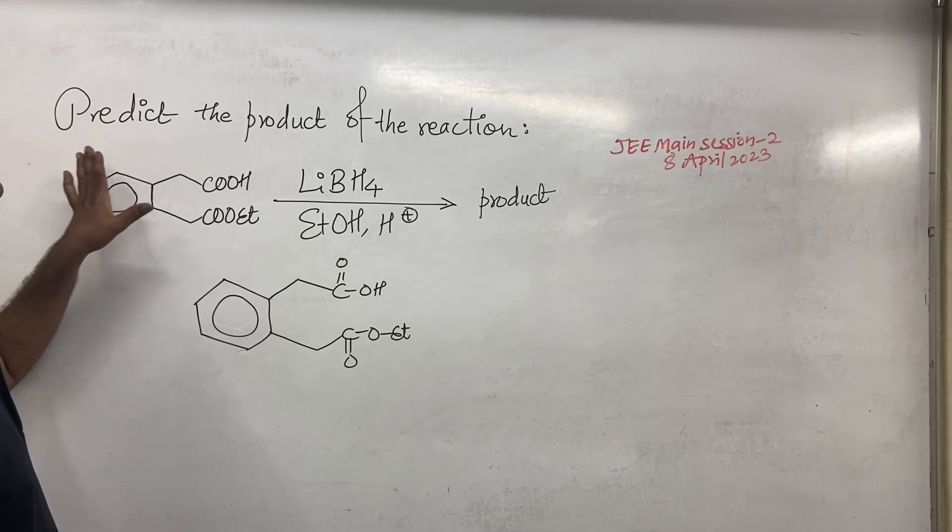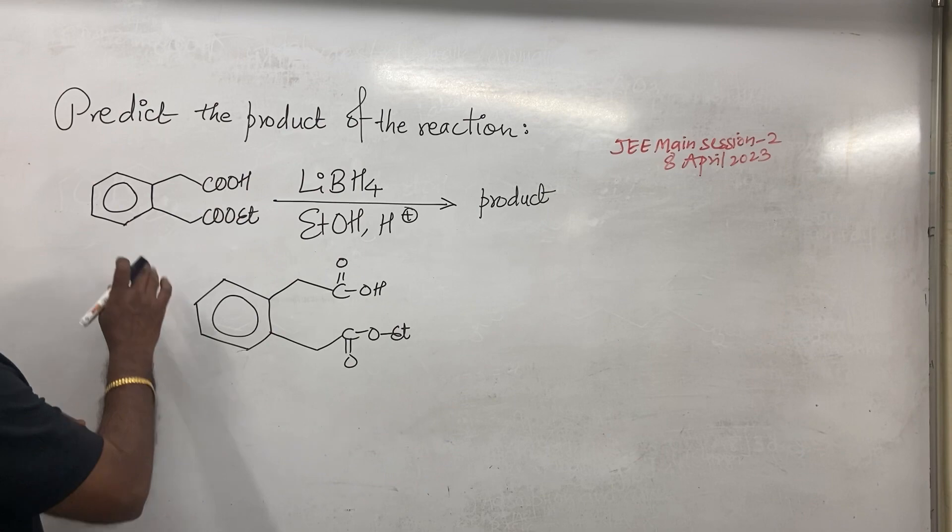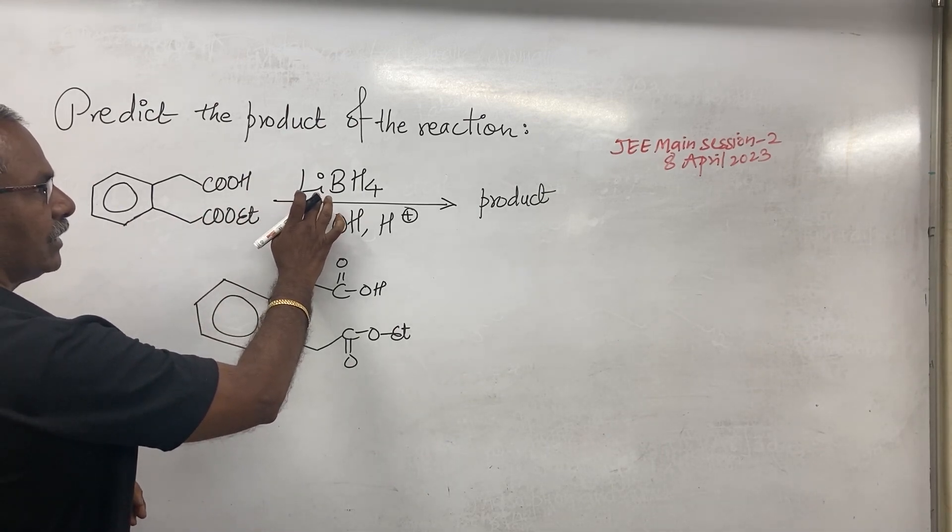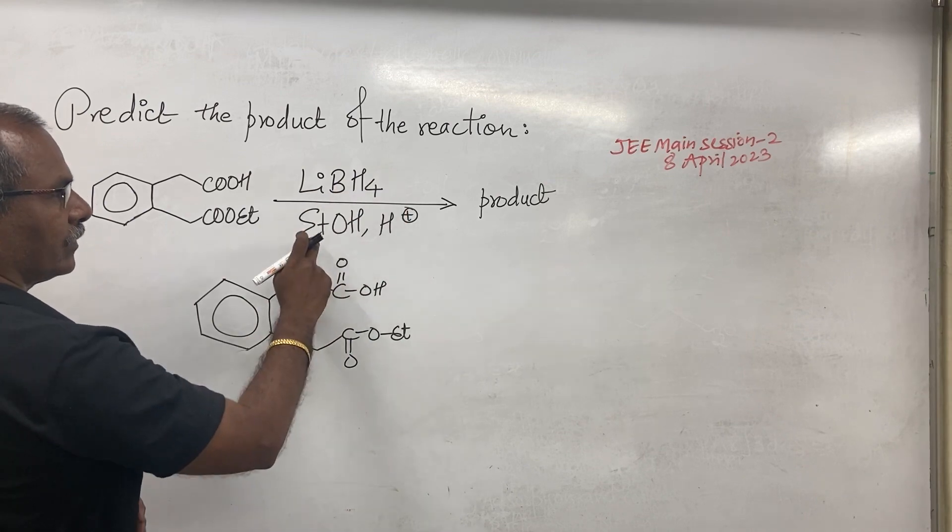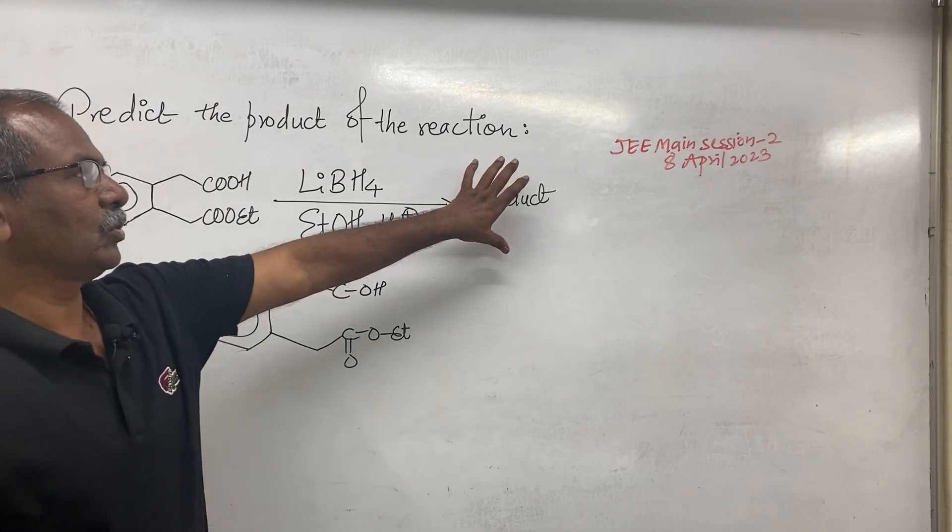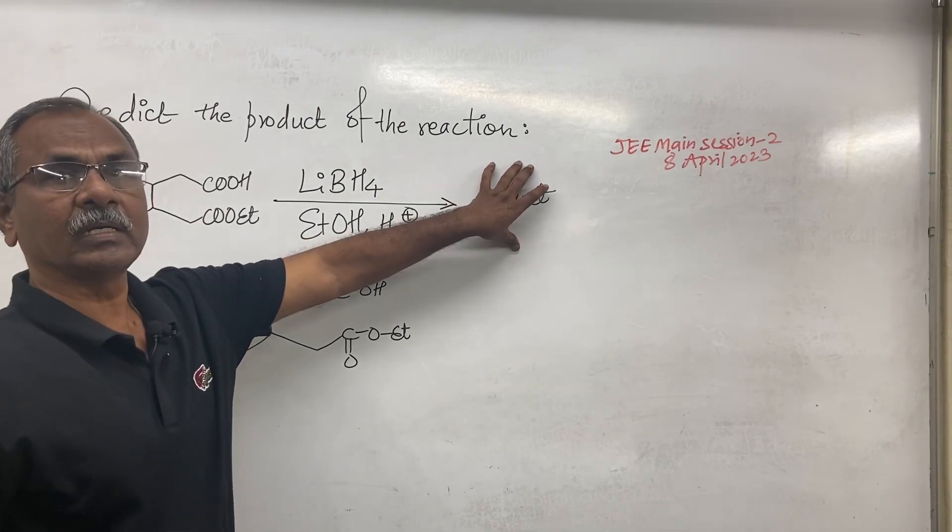Now this is the question: predict the product of the reaction. Here the reactant is given and the reagent is lithium borohydride, ethyl alcohol, and H+ for hydrolysis. So you have to predict the product of the reaction.